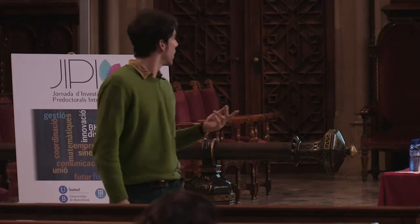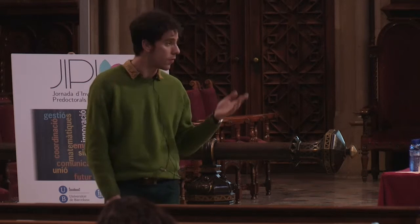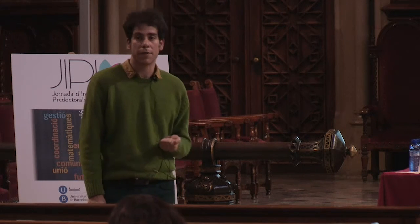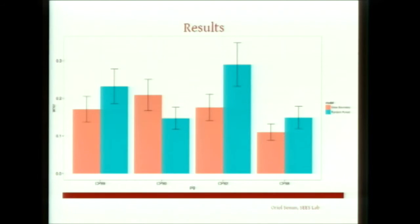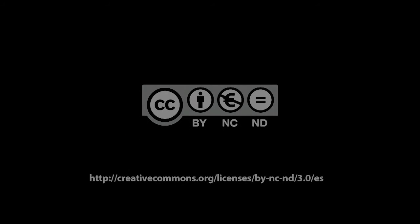And these are the results. The red bars come from a physical theory-based model, and you can see that in blue, the random forest gives more or less a competitive error rate of prediction. So that was the message I wanted to give you. Thank you very much.